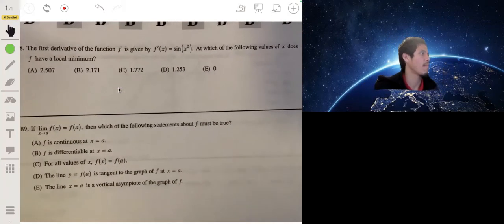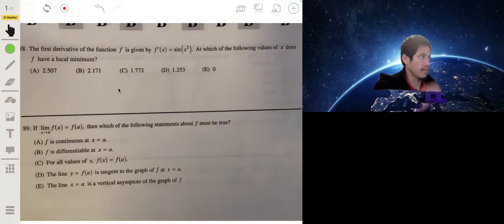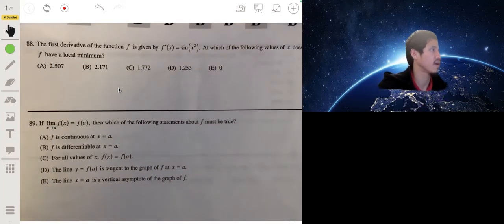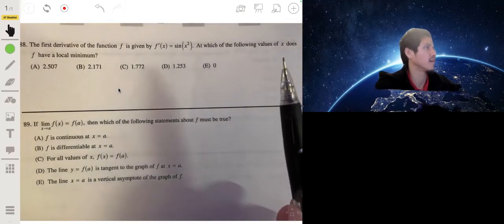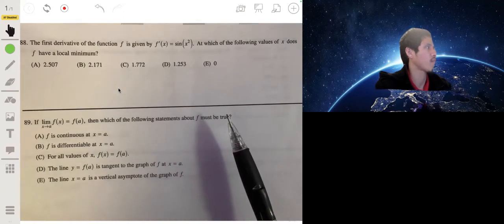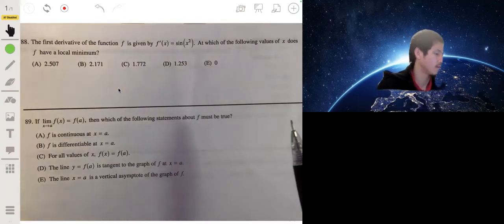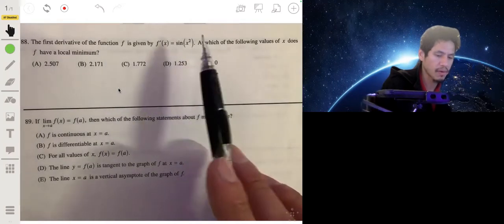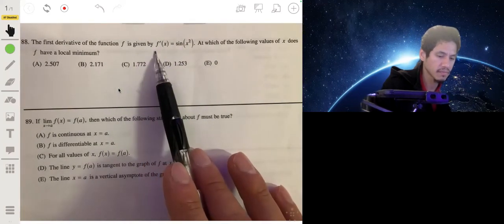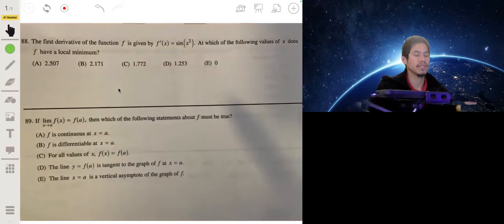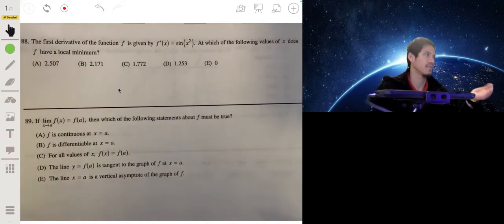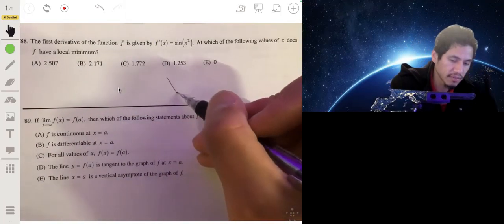Alright, so the first derivative of the function f is given by f prime of x equals the sine of x squared. Which of the following values of x does f have a local minimum? So we just look at probably the graph of this and see where it's basically going from positive or sorry, where the derivative is going from negative to positive.